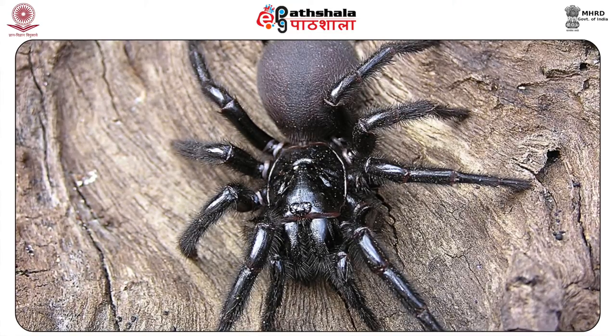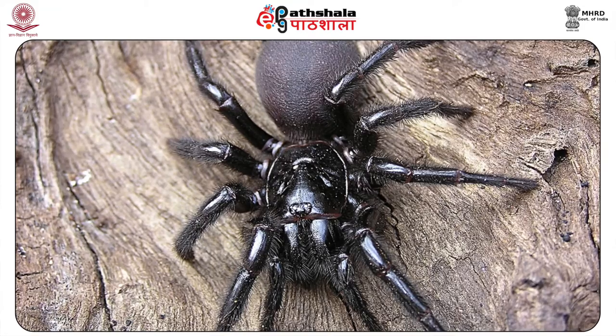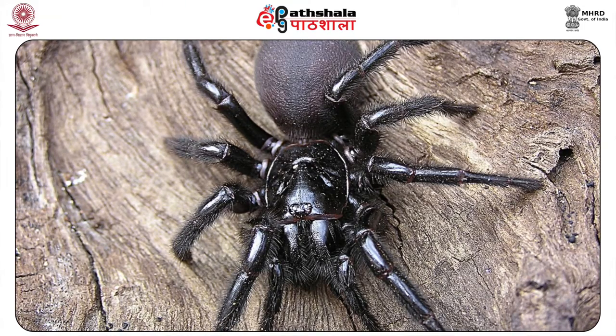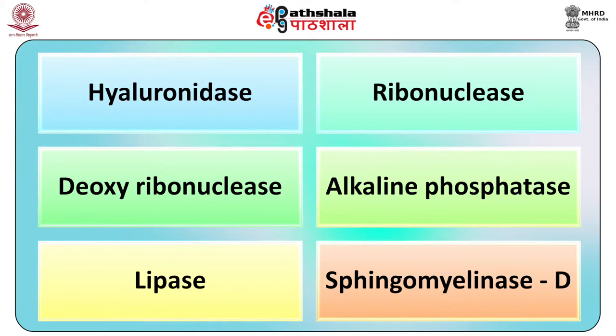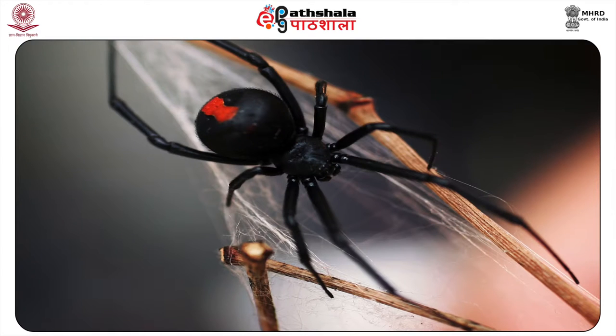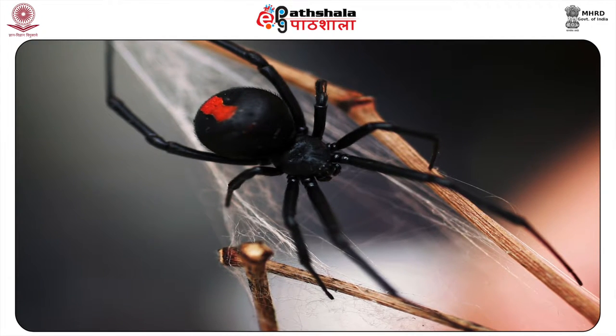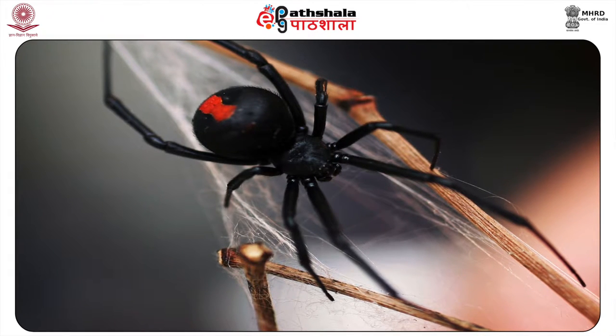The funnel web spider, which can cause significant envenomation, is found only in the Australian continent. The venom of the brown recluse is cytotoxic and consists of several toxic components including hyaluronidase, ribonuclease, deoxyribonuclease, alkaline phosphatase, lipase and sphingomyelinase D. The last mentioned is the main constituent responsible for tissue destruction. The venom of the black widow is neurotoxic and contains 6 active components of molecular weight ranging from 5,000 to 130,000 Da. The main component is alpha-latrotoxin, which binds avidly to a specific presynaptic receptor.